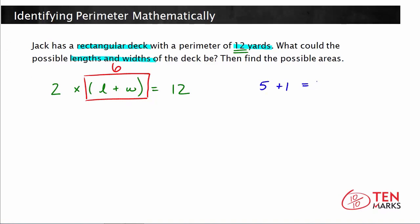5 plus 1 equals 6, so we can have 1 and 5 or 5 and 1 as the length and width. You could have 3 plus 3, which also equals 6. And lastly, you could have 4 plus 2 or 2 plus 4. These are the potential length and width measurements.